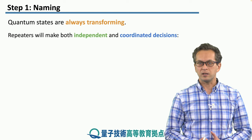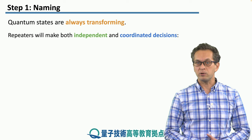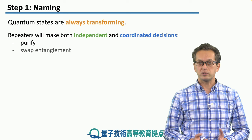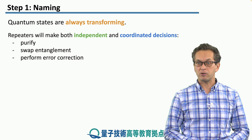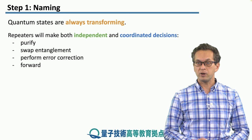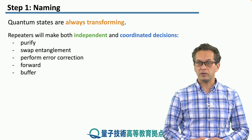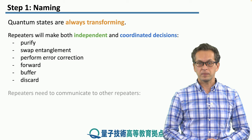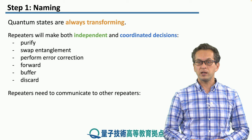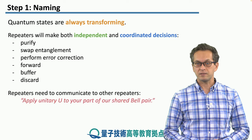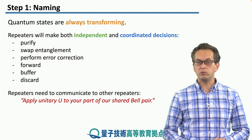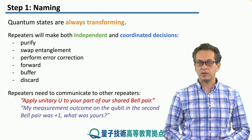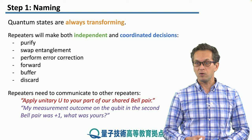Repeaters have to take decisions both independent and coordinated. They must decide: do we purify, do we swap entanglement, do we perform error correction, do we forward the qubits that we have, or do we buffer them and keep them for later, or do we outright discard the qubits? So repeaters need to communicate to other repeaters things like: apply unitary U to your part of our shared bell pair, or my measurement outcome on the qubit in the second bell pair was plus one — what was yours?